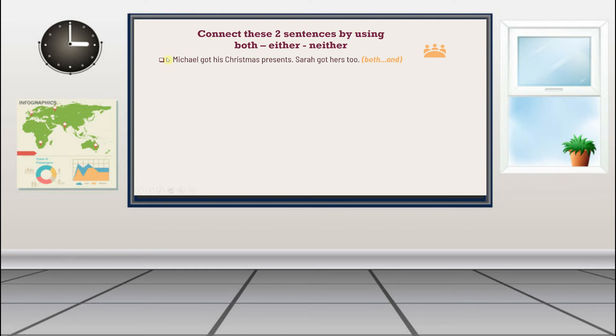The first question: Michael got his Christmas presents. Sarah got hers too. How can you combine these two sentences by using both and and? The answer will be 'Both Michael and Sarah got their Christmas presents.' In this case, you put the word both before the noun, which is the name of the person Michael, and 'and' before Sarah as well.